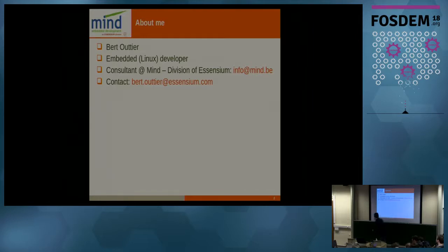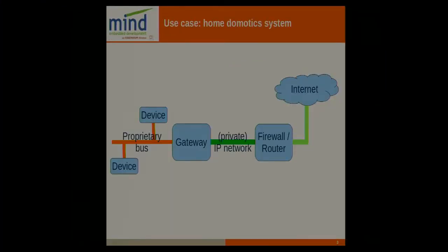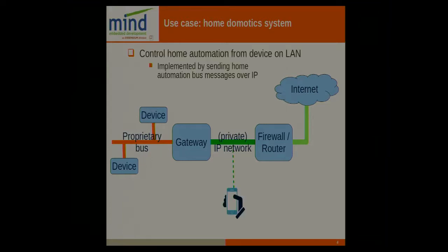Our clients are always working with some kind of embedded products and an embedded system. In this example, it was a client in the home automation sector. A typical situation there is that you have some kind of home automation bus with all devices connected to it, whether it's Philips Hue or KNX or whatever — there's always some proprietary bus system. If you want to control it with your mobile application, you need some sort of gateway device which translates the IP network on one side towards your proprietary bus.